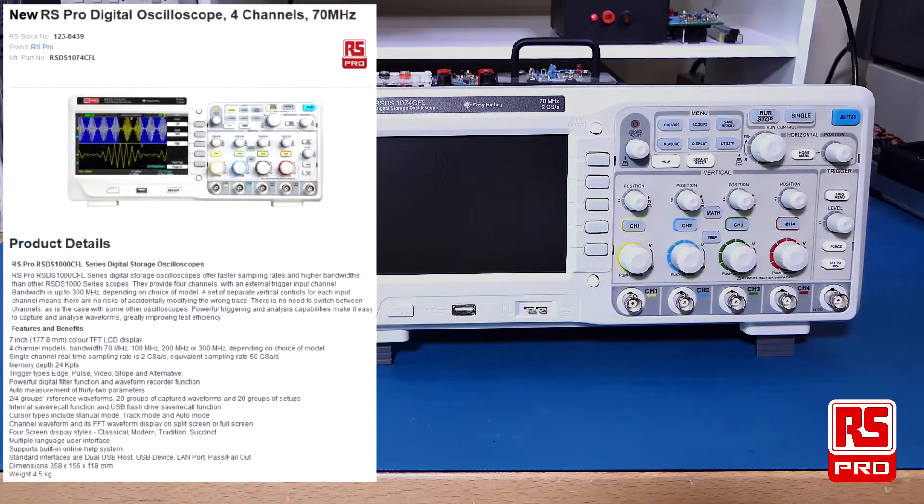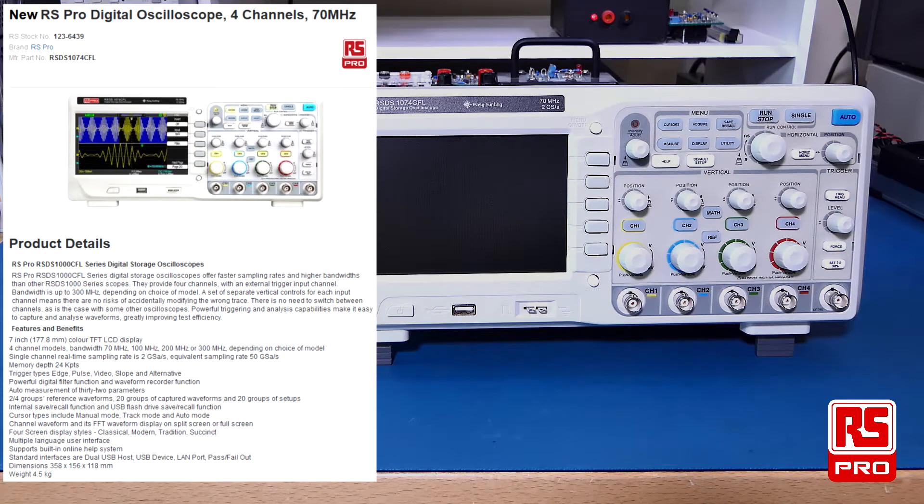The RS-PRO RSDS-1000 series oscilloscopes come in a range from 70 MHz to 300 MHz. They are four-channel scopes with 24,000 points of memory. They have powerful digital and waveform record function.